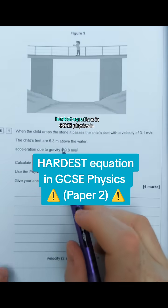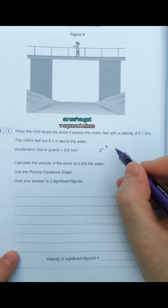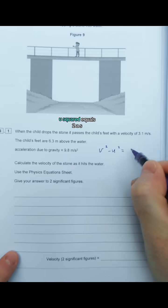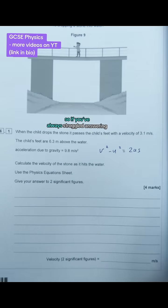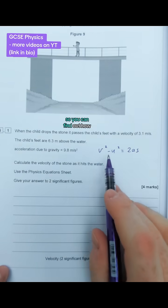This question has one of the hardest equations in GCSE physics. It's the one with all the squared values. We've got v² minus u² equals 2as. If you've always struggled with this equation, make sure you watch this video to find out how to use it.